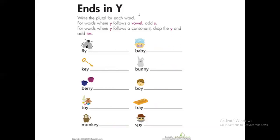So if we have a vowel before the 'y', we're going to add 's' without changing anything. But if we have a consonant before the 'y', change the 'y' to 'i' then add 'es'.